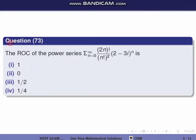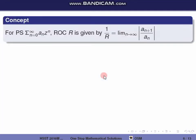Next question, question 73. The radius of convergence of the power series sigma n equals 0 to infinity of (2n) factorial divided by (n factorial) squared into (2 minus 3i) to the power n. We use the concept for the power series sigma n equals 0 to infinity a_n z to the power n to find the radius of convergence.